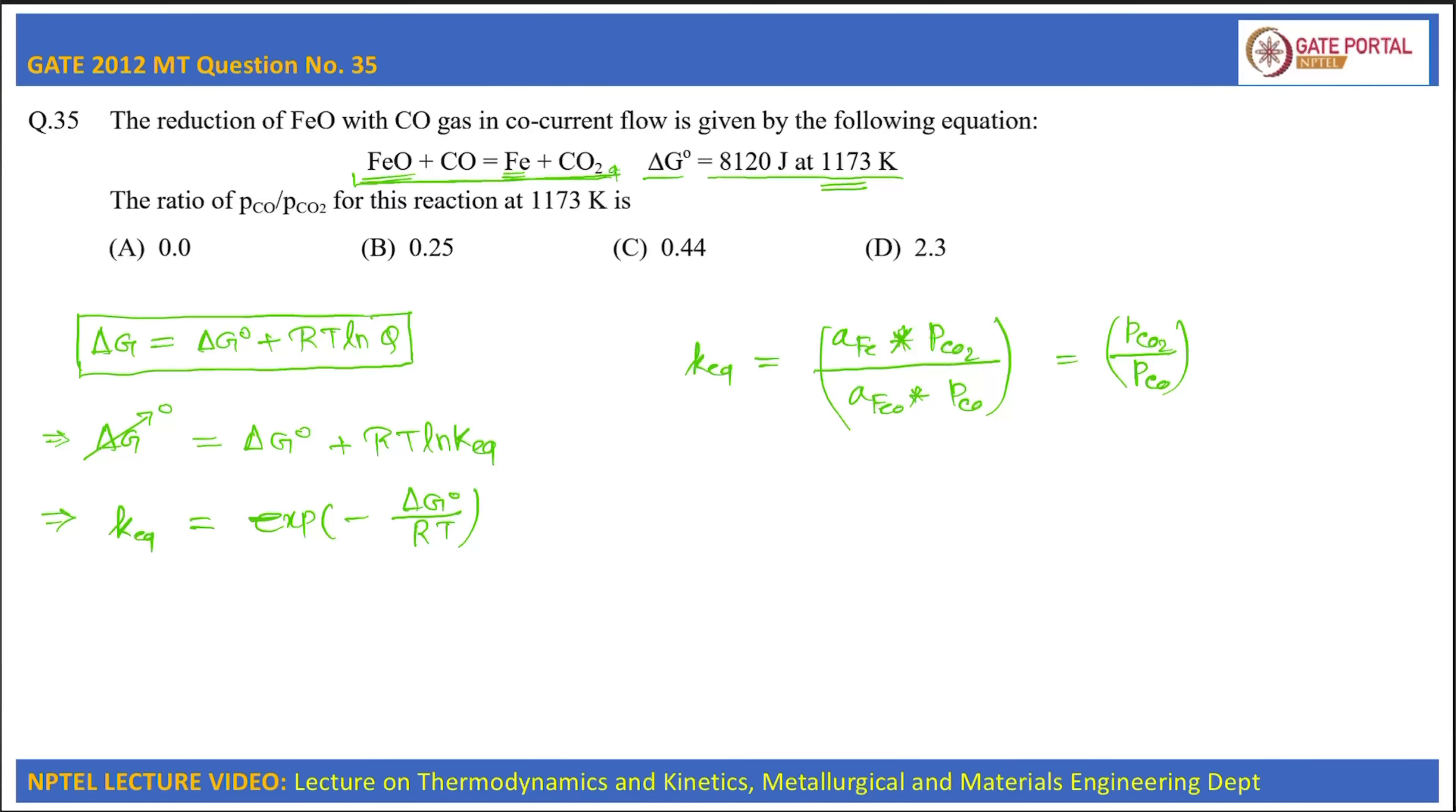Now if we put the values that are given to us in this equation, we will get K equilibrium, that is PCO2 by PCO, is equal to exponential of minus ΔG° at 1173 Kelvin, which is given as -8120 joule divided by R is 8.314 and T is 1173 Kelvin.